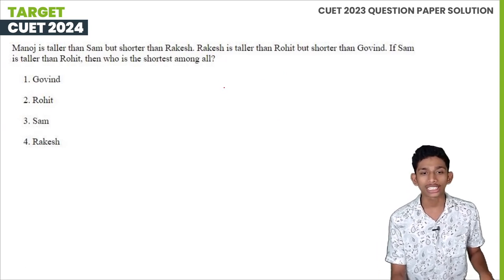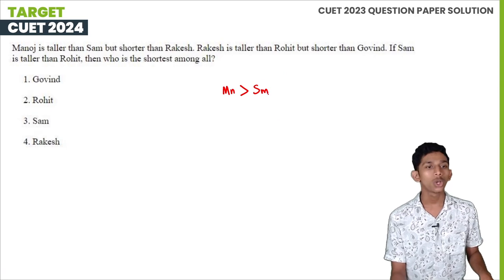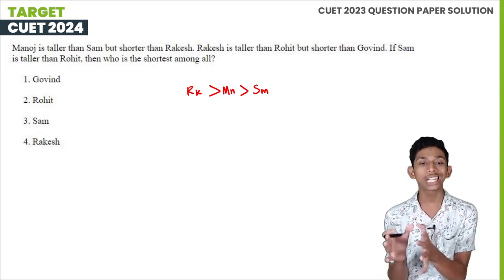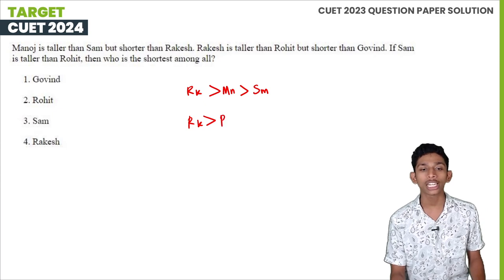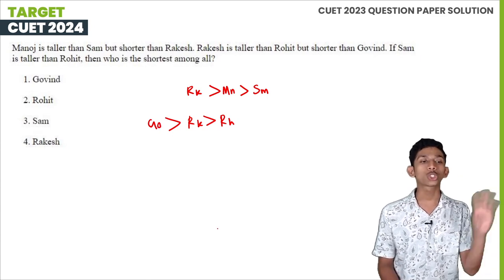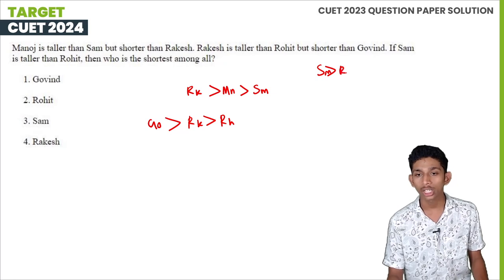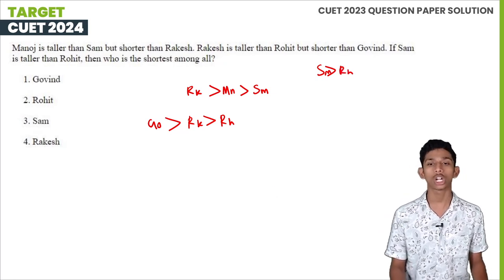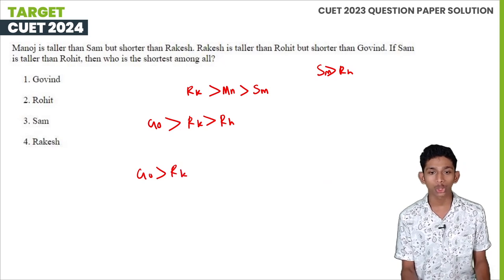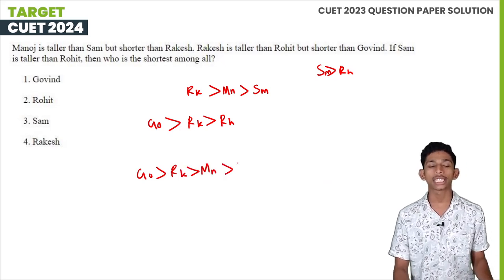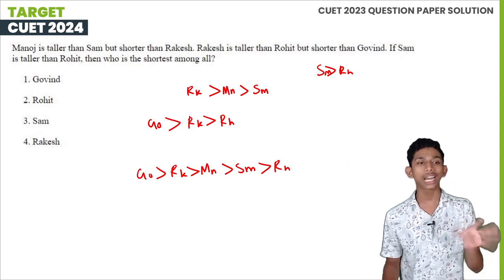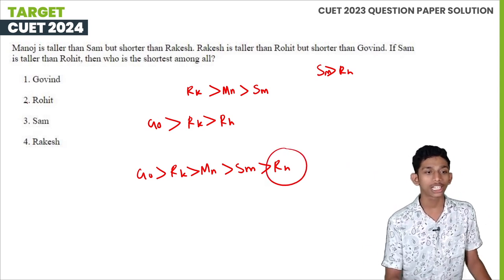Manoj is taller than Sam but shorter than Ragesh. Ragesh is shorter than Govind. Ragesh is taller than Rohit. If Sam is taller than Rohit, who is the shortest? The order is: Govind is the tallest, then Ragesh, then Manoj, then Sam, and Rohit is the shortest.